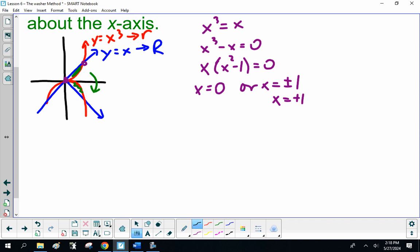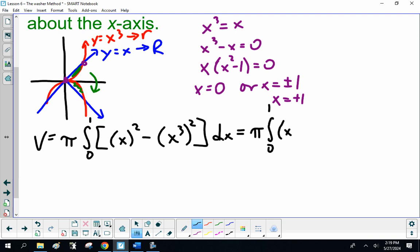So, volume is π integral 0 to 1 of capital R, which is x, minus x³ squared dx. That is π times the integral from 0 to 1 of [x² - x⁶]dx.